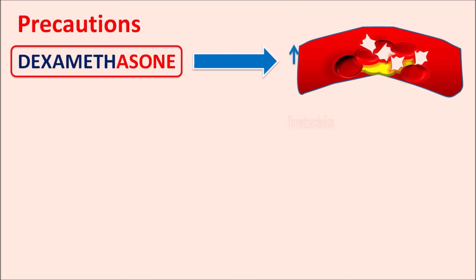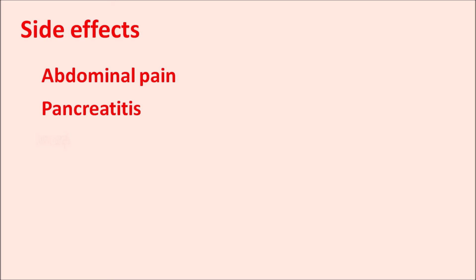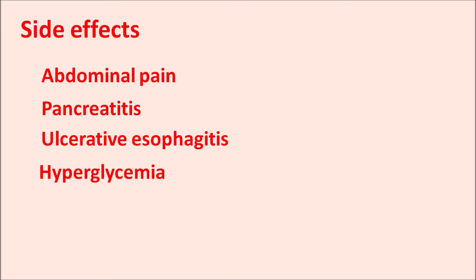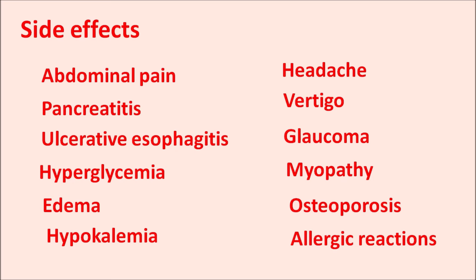Dexamethasone can increase the risk of thromboembolism. Side effects include gastrointestinal effects such as abdominal pain, distension, pancreatitis, and ulcerative esophagitis. It can elevate blood glucose levels causing hyperglycemia, increase fluid retention causing edema, and decrease potassium levels causing hypokalemia. Other side effects include headache, vertigo, glaucoma, cataracts, myopathy, muscle pain, osteoporosis, osteonecrosis, and allergic reactions. It can also suppress the HPA axis, resulting in symptoms associated with Cushing syndrome.